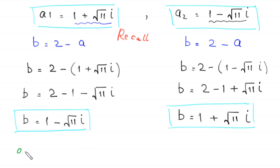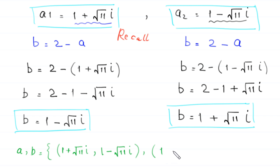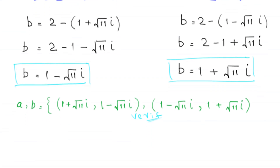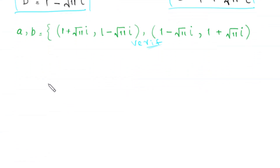So from here we get two pairs of solutions. The first pair is (a, b) equal to (1 plus root 11 i, 1 minus root 11 i). The second pair is (1 minus root 11 i, 1 plus root 11 i). Now let us verify these values of a and b using the original equations: the first equation is ab equal to 12, and the second equation is a plus b equal to 2.